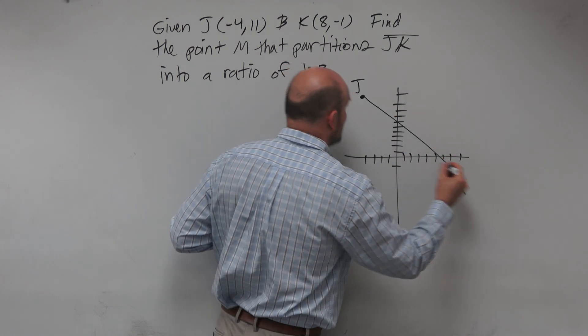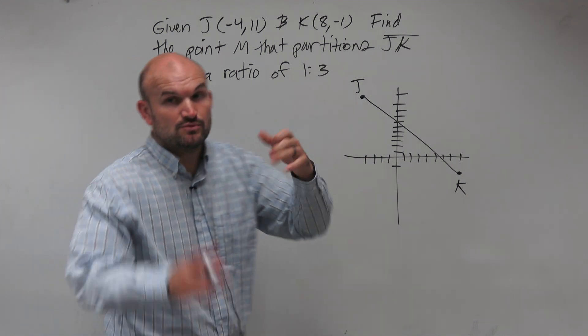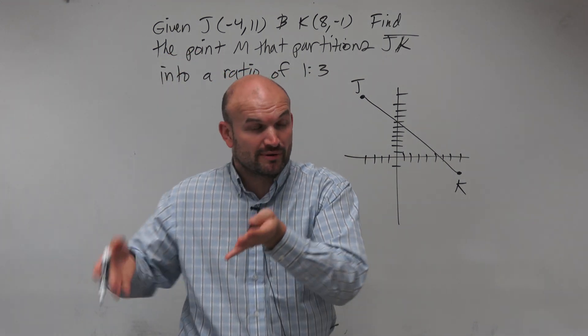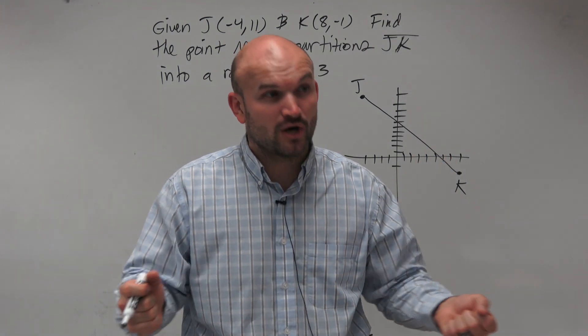And we want to find the point M that is going to partition this into a ratio of 1 to 3. That means one part to three parts. We're going to compare one part to three parts, meaning there is a total of four parts.